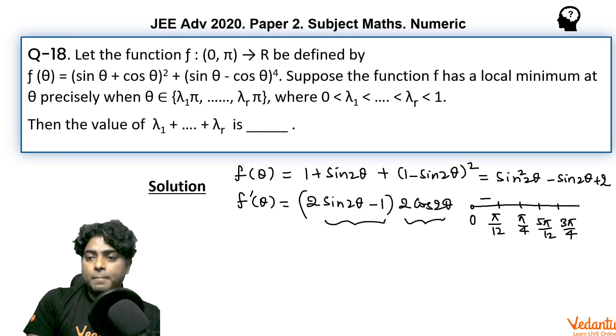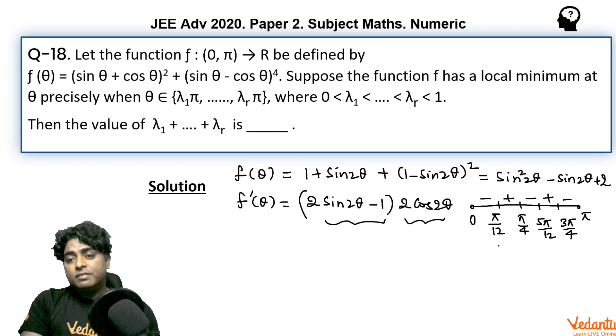In the 0 to π/12 interval, the sign of f' is negative. Next would be plus, minus, plus, minus in a usual manner. So the points through which f' changes sign from negative to positive are the points of local minima. Here those points are π/12 and 5π/12.